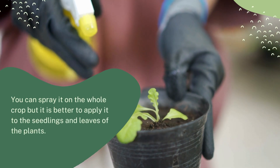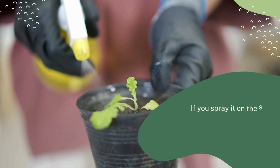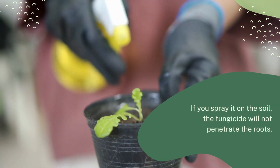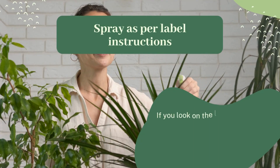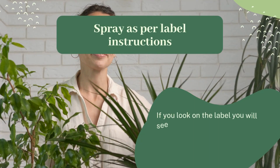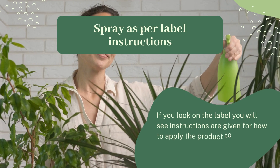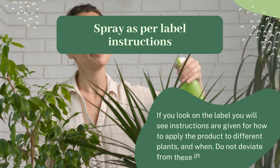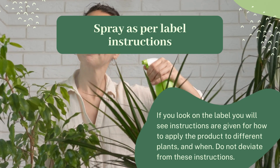You can spray it on the whole crop, but it is better to apply it to the seedlings and leaves of the plants. If you spray it on the soil, the fungicide will not penetrate the roots. Spray as per label instructions — the label gives instructions for how to apply the product to different plants and when. Do not deviate from these instructions.